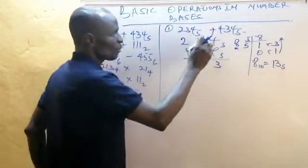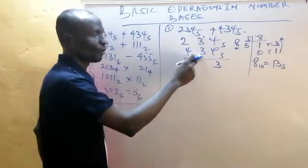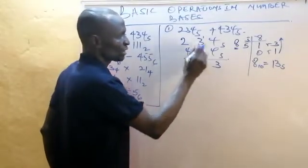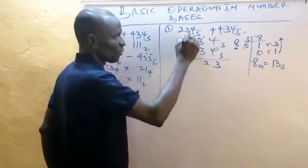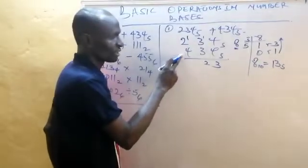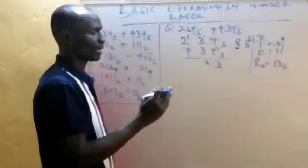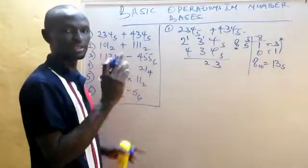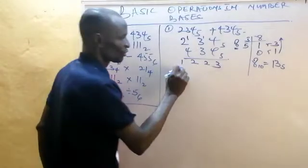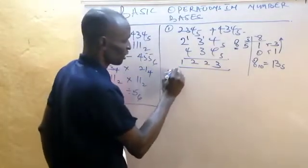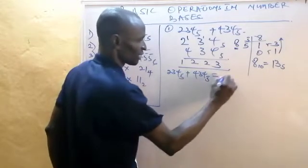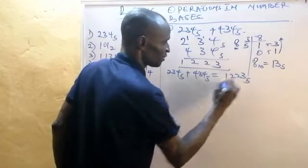One plus three is four, plus four is seven. Seven in base five: five into seven is one remainder two, so I write two and carry one. Again, two plus one is three, plus four is seven. Seven in base five again gives two remainder one — I write two and carry one. So 234 base five plus 434 base five equals 1223 base five.